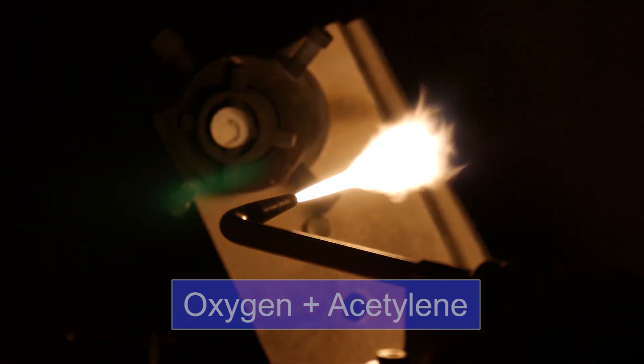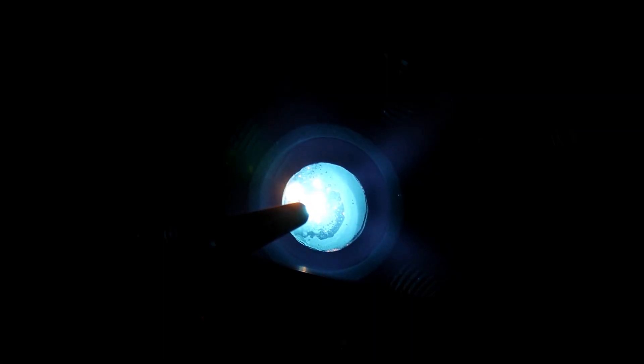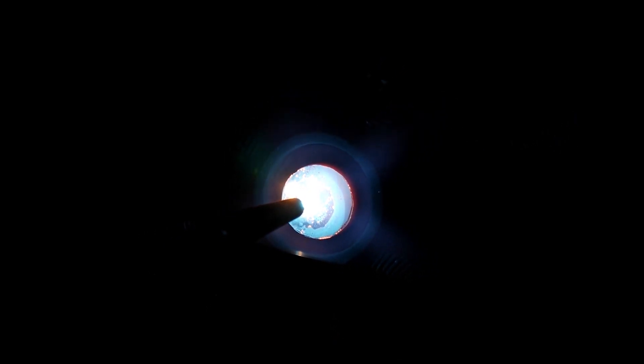Oxy-acetylene torches are typically used by welders to join metallic materials. The torch can produce a very high temperature flame, as high as 3,500 degrees centigrade.